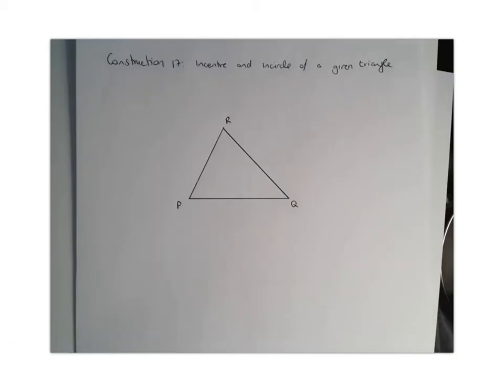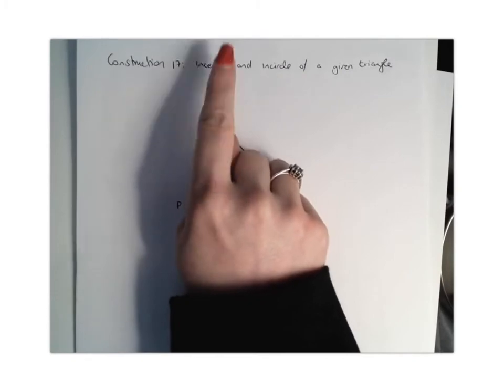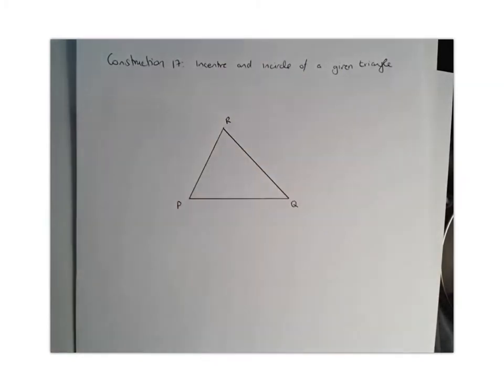In construction 17 we're going to calculate the in-center and in-circle of a given triangle. So basically what we're going to do is we're going to start by finding the in-center and then once we find the in-center we'll be able to draw our in-circle.